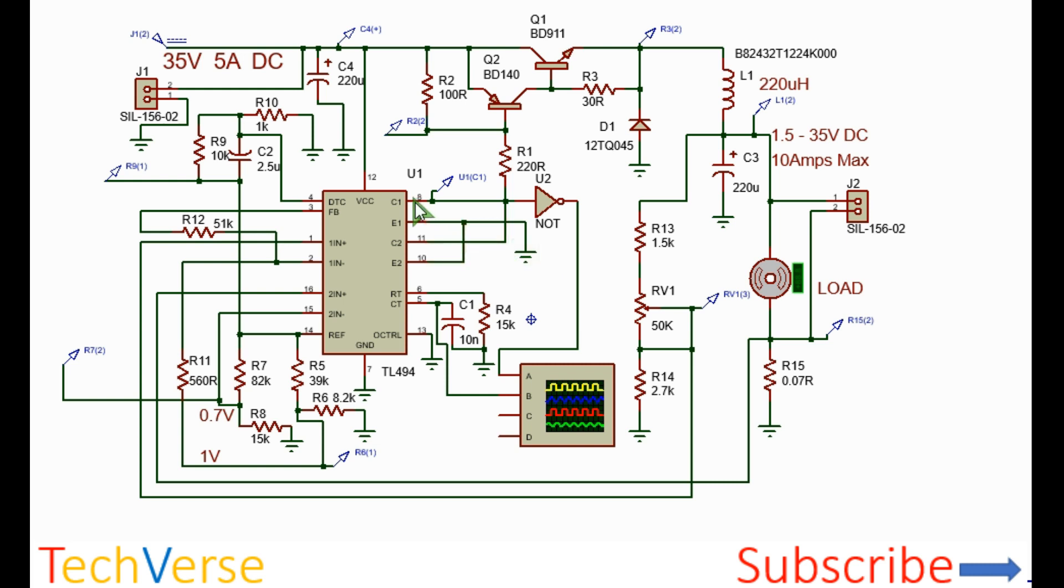Connect both open collector pins 11 and 8 of the IC together, and the open emitter pins 9 and 10 together. Connect the emitters to ground. What happens is when the internal drivers are on, current will flow through resistors R1 and R2 to ground.